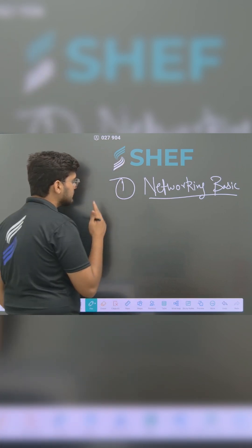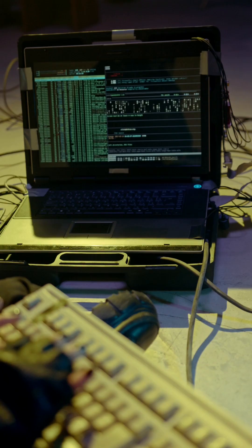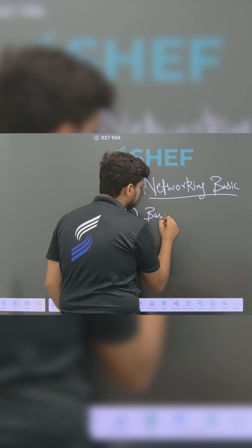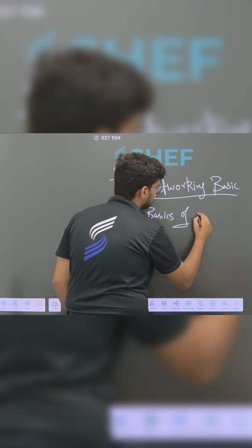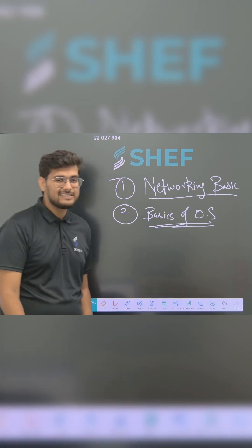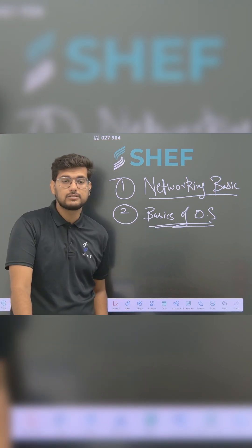The second step you have to learn for ethical hacking is all about the basics of operating systems. How the operating system works, because if you want to hack systems, you should know about the operating system.